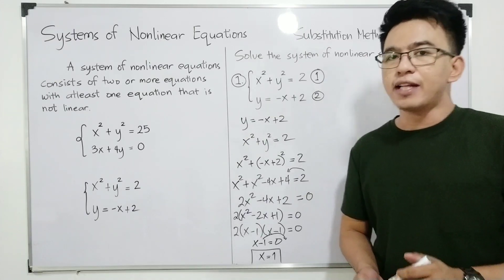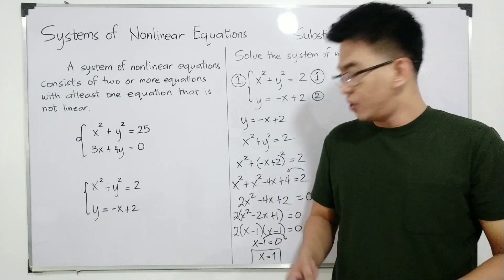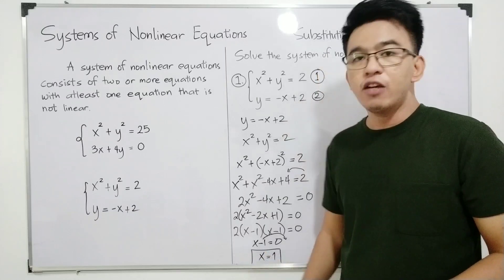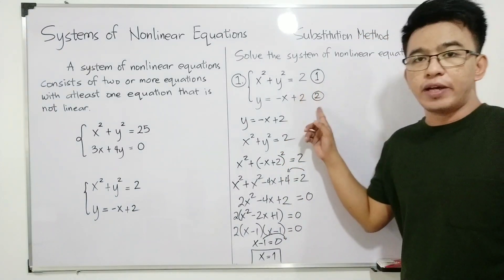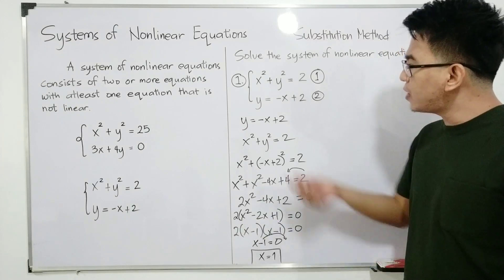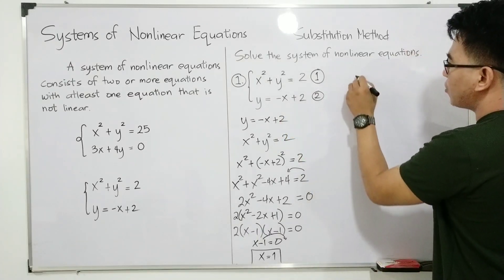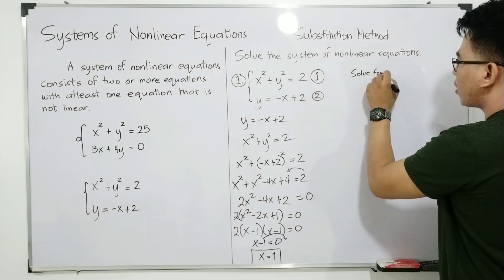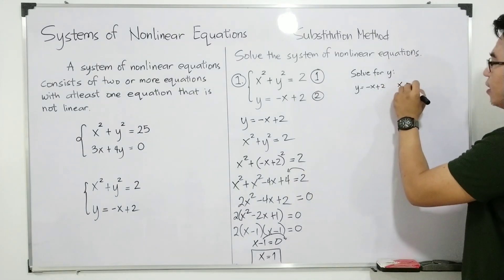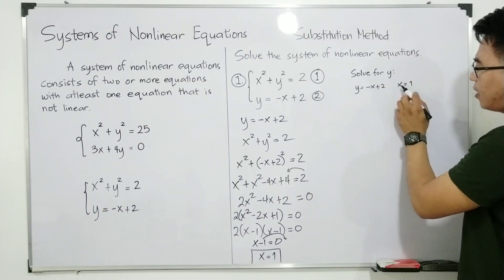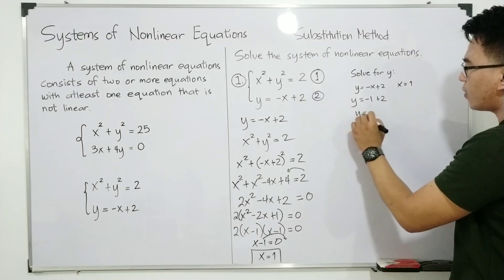We're not yet done. Our target is to find the values of x and y that will satisfy the given system. Since we're done solving for x, we will now solve for y. You can use equation number 1 or equation number 2, but I'll be using equation number 2 since y is already isolated. Using equation number 2: y is equal to negative x plus 2. Substituting the value of x, which is 1, you have y is equal to negative 1 plus 2, and your y is equal to 1.